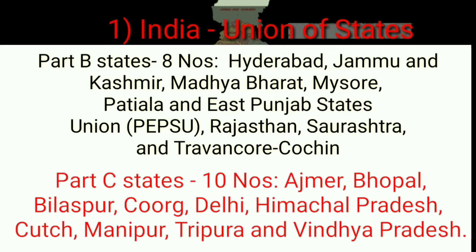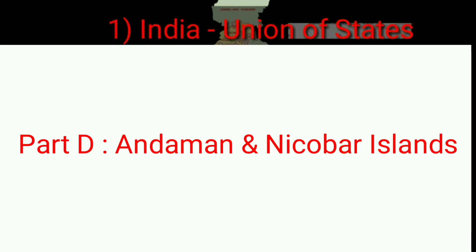Part C had 10 states: Ajmer, Bhopal, Bilaspur, Coorg, Delhi, Himachal Pradesh, Kutch, Manipur, Tripura, and Vindhya Pradesh. Finally, Part D was Andaman and Nicobar Islands.